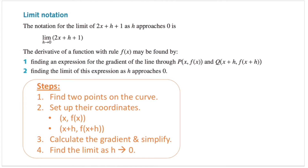Welcome back to another video. In the previous video we found the tangent on a curve at a point, which is essentially finding the instantaneous rate of change at that point. We said that we can find the derivative of a function at a given point by making the h value approach zero.